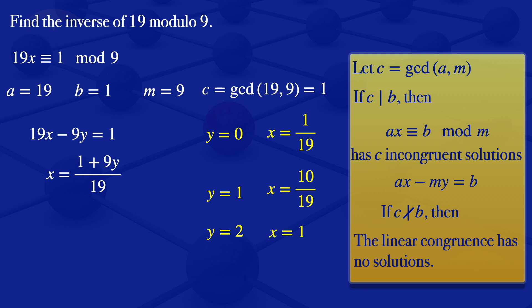We now have found an integer value of x, so that's the solution that we are looking for. And this integer value is the inverse of 19 modulo 9. So what we are having there is the inverse of 19 modulo 9 is 1.